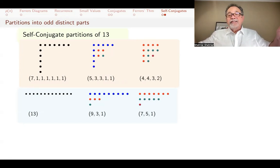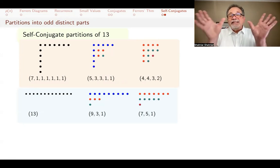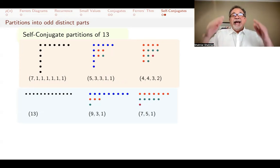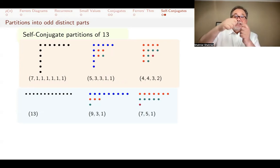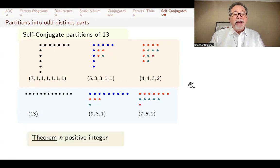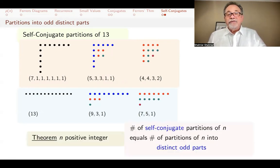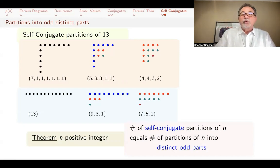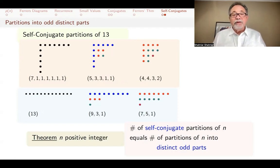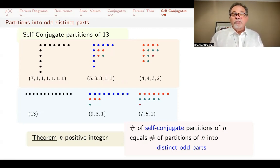If you have an odd number of dots in a row, take the middle one — since it's odd, there's always something in the middle. For example, with 15 things you have seven on each side plus one in the middle. Take that middle one and bend the others into a row and column, forming an L-shaped layer. As long as all parts are odd and distinct, you can keep bending them into layers and build a self-conjugate partition. So we have proved that for any positive integer n, the number of self-conjugate partitions of n equals the number of partitions of n into distinct odd parts.